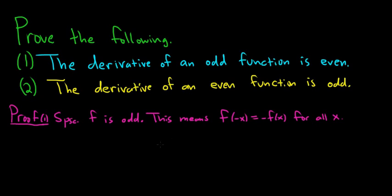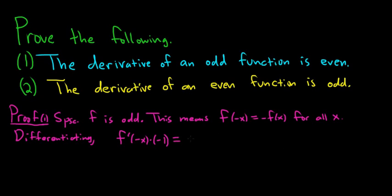Now we have to show that the derivative is an even function. What I'm thinking is that we have to take the derivative of both sides of this equation — differentiating both sides. When you take the derivative of the left-hand side, you get f prime of negative x times the derivative of the inside — that's the chain rule. The derivative of negative x is negative 1. And on the right-hand side, the negative hangs out, so we just get negative f prime of x.